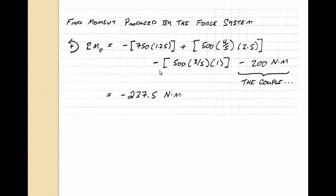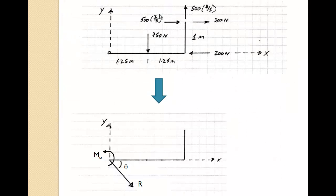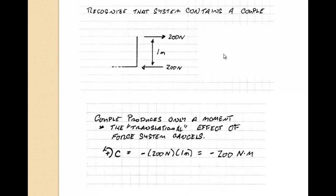Now the next thing we want to do is find the moment produced by the force system. So if we go back and take a look at the picture, which we have here, we have the 750 newton force is going to cause clockwise rotation. The 500 times 3 fifths newton force is also going to cause clockwise rotation negative. And the 500 times 4 fifths newton force is going to cause positive rotation. And the 200 newton couple forms clockwise rotation. So that comes in as negative.